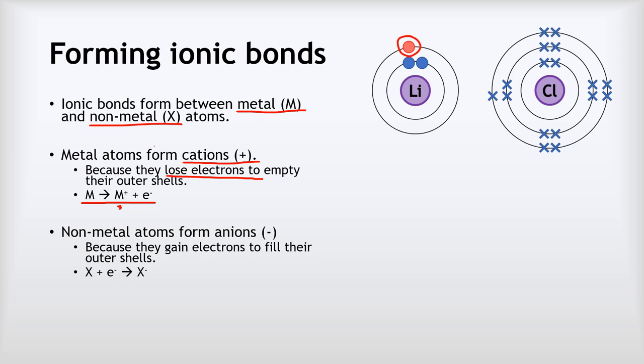Equally, non-metal atoms gain electrons to form anions. The reason why is because they want to fill their outer shells. We can represent that like this: X for our non-metal gaining an electron to form the X- anion. In this example, we've got chlorine with seven electrons in its outer shell, and there's that gap there that it's going to want to complete to give it a full outer shell.